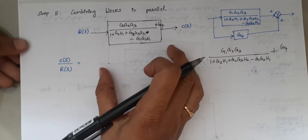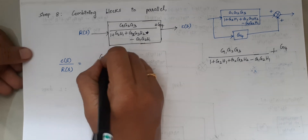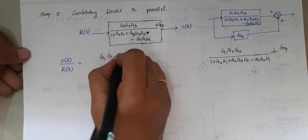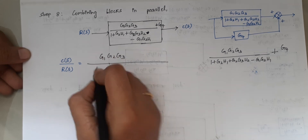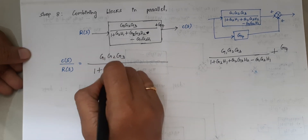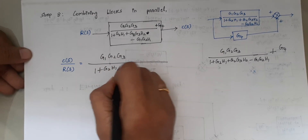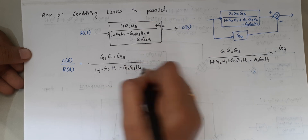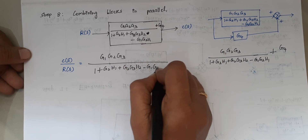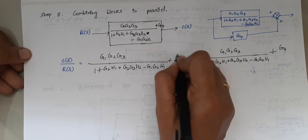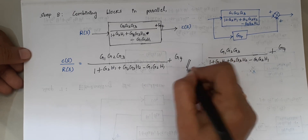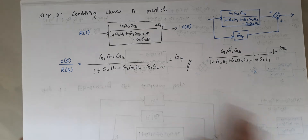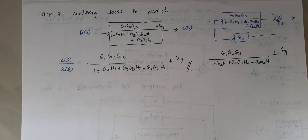This is our required transfer function. C(S)/R(S) equals G1*G2*G3 divided by (1 + G2*H1 + G2*G3*H2 - G1*G2*H1) plus G4. Our problem is complete. Thank you.